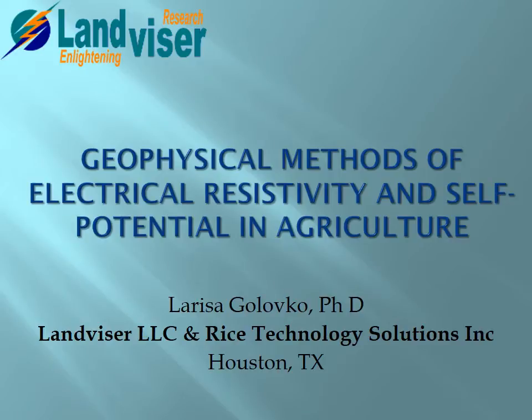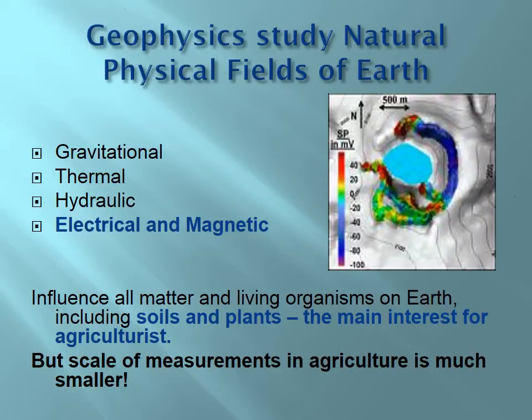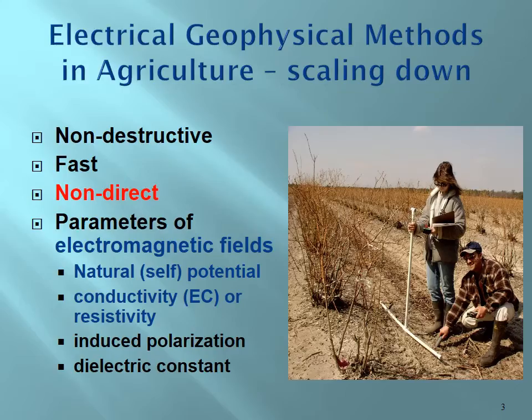Today I'm going to present an overview of geophysical methods — electrical resistivity and self-potential — and their usage in agricultural mapping and monitoring. Geophysics studies natural physical fields which exist on Earth: gravitational fields, thermal fields, hydraulic fields, and electrical and electromagnetic fields. Those fields include all matter and all living organisms on Earth, including soils and plants, which are the main interest for agriculture. The problem is that the scale of measurements in agriculture is much smaller than in conventional geophysics.